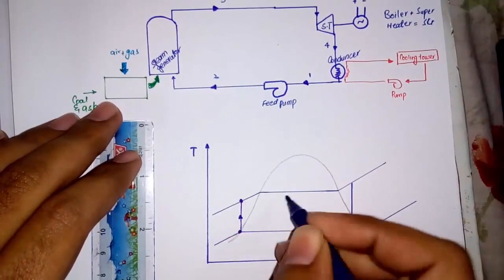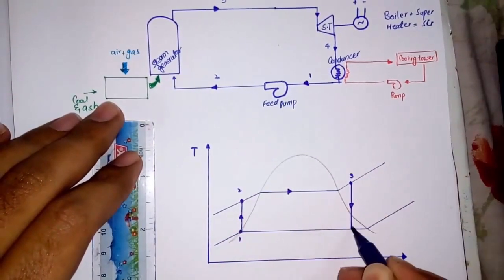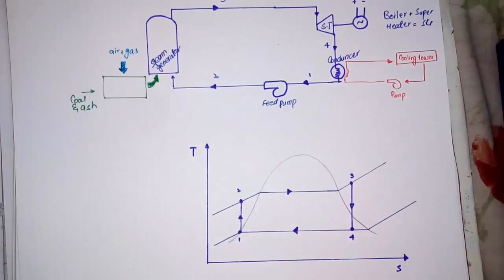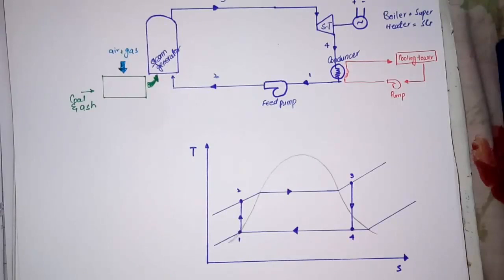Now let's look at the processes. In process one to two, the working fluid is pumped from low to high pressure; as the fluid is liquid at this stage, the pump requires little input energy. In process two to three, the high pressure liquid enters the steam generator where it is heated at constant pressure by an external heat source to become a dry saturated vapor. In process three to four, the dry saturated vapor expands through a turbine generating power, which decreases the temperature and pressure of the vapor and some condensation may occur. In process four to one, the wet vapor enters a condenser where it is condensed at constant pressure to become a saturated liquid.